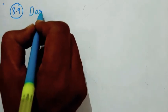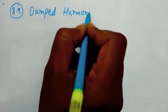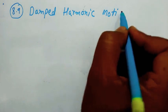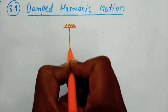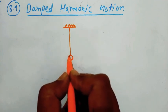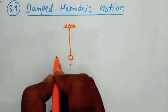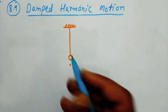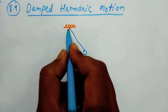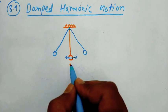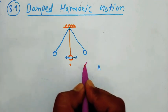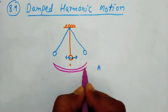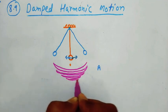Next topic: Damped Harmonic Motion. In a simple pendulum, here is the mean position. If the bob is displaced from its mean position and released, the bob oscillates about the mean position. Initially it has maximum displacement, so that is A. But we observe after some time the amplitude is decreasing — from here to here, the amplitude is decreasing. And finally, it comes to rest.